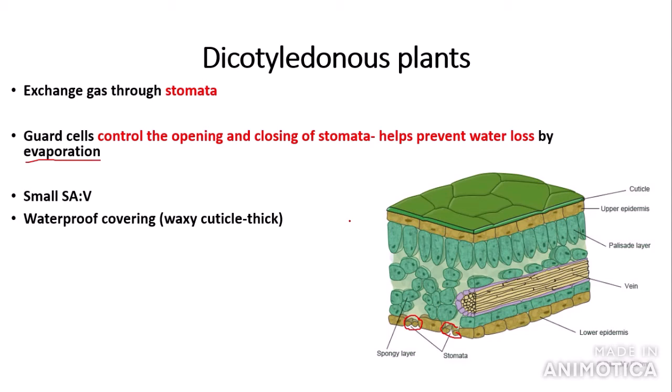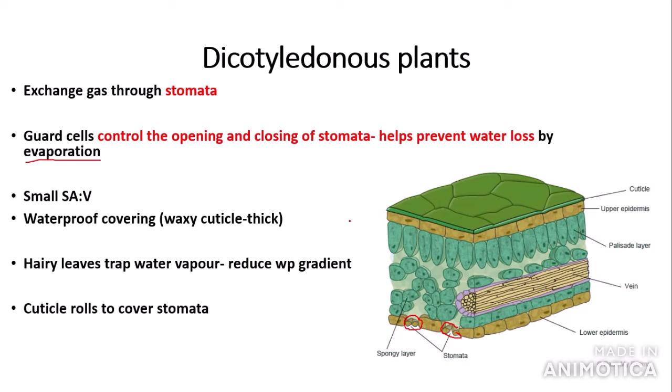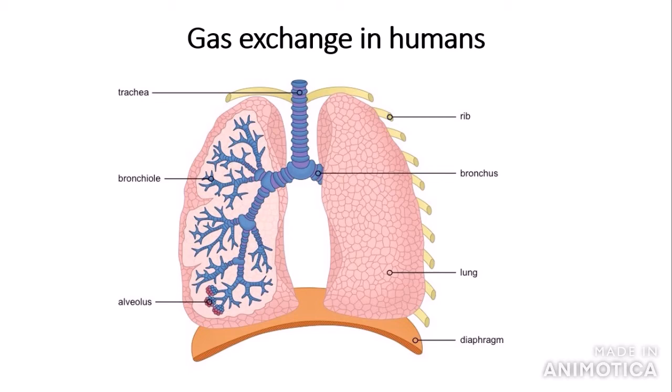Many plants have hairs on their leaves which trap water vapour, collecting it and reducing the water potential gradient, meaning less water is lost by evaporation. Also, the cuticle or the leaf can roll to cover the stomata, again lowering the water potential gradient so less water is lost by evaporation.